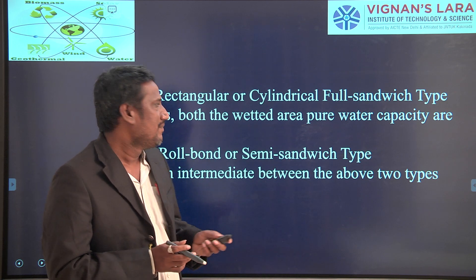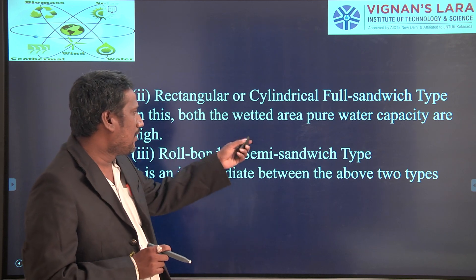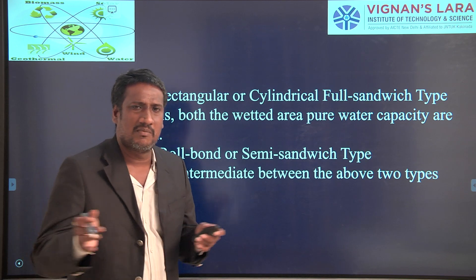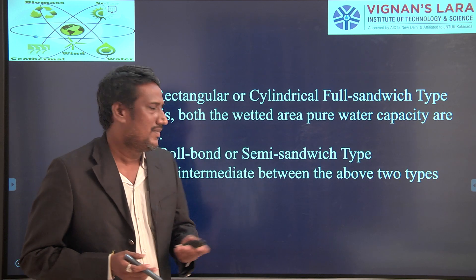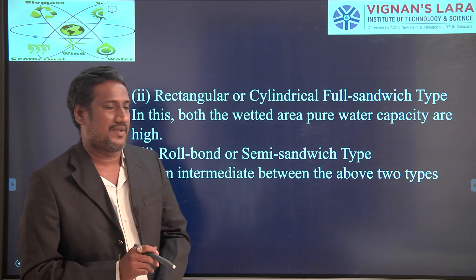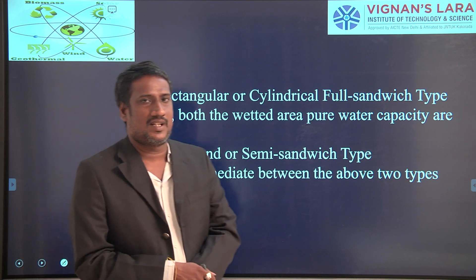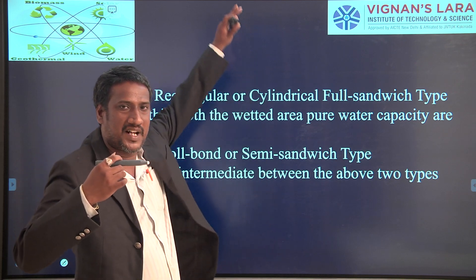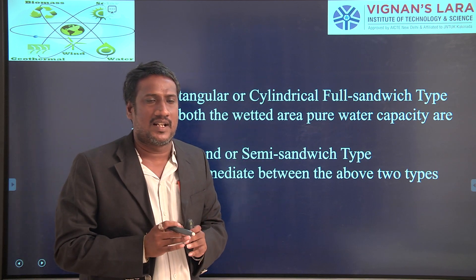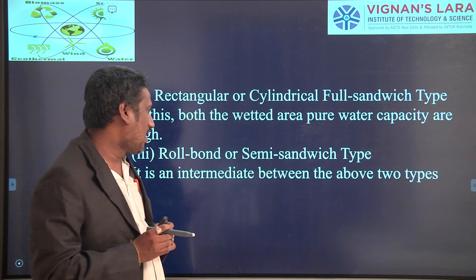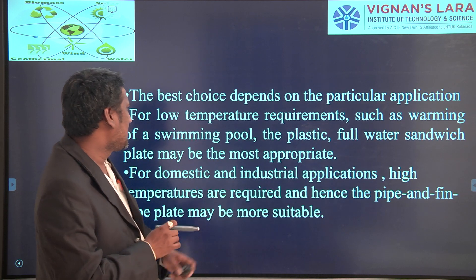The roll bond or semi-sandwich type is an intermediate between the above two types. In the first type (pipe and fin), temperature is more but the quantity of water heated is less. In the second type (full sandwich), a large amount of water is heated but the temperature achieved is less. The roll bond or semi-sandwich type is intermediate between these two.